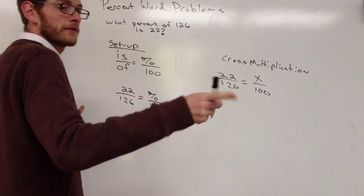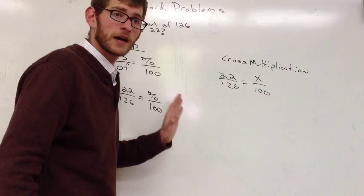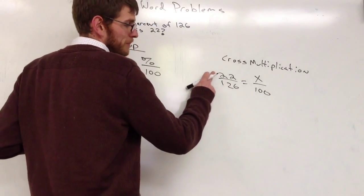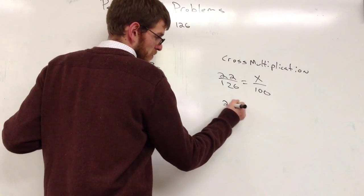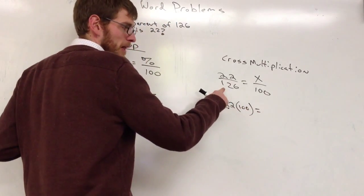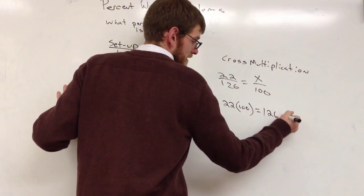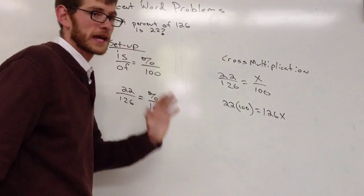Alec, can you make sure you have a calculator up so you can check my math? Okay, so to cross multiply, these are the steps. Top left times bottom right, 22 times 100, equals bottom left times top right, equals 126x. Everybody see what's happening so far?